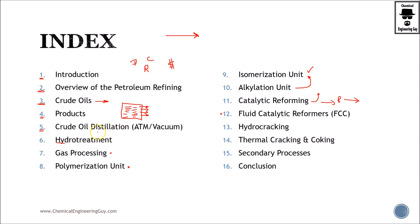Then we continue with the unit operations. In my opinion, the crude distillation unit and vacuum distillation unit are the most important ones, because those are actually obtaining all the crude oil cuts — the initial fractionation. If you don't understand how the crude is fractionated there, it's going to be hard to understand the specific downstream units. So very important: CDU and VDU — pay attention to these.